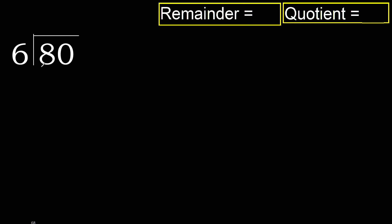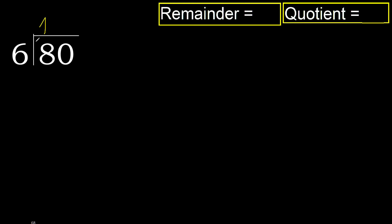80 divided by 6. 8 is not less, therefore with 8: 6 multiplied by which number is nearest to 8 but not greater? 6 multiplied by 2 is 12 — 12 is greater. 6 multiplied by 1 is 6 — is not greater.